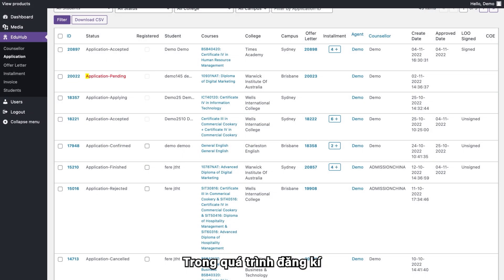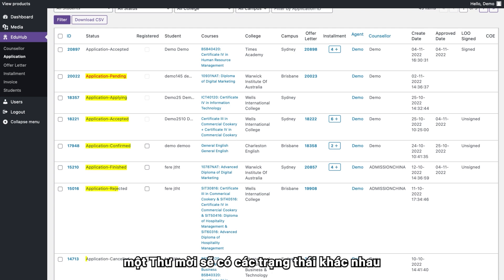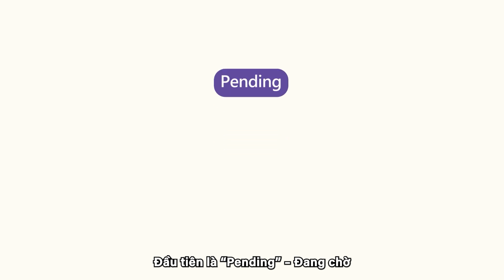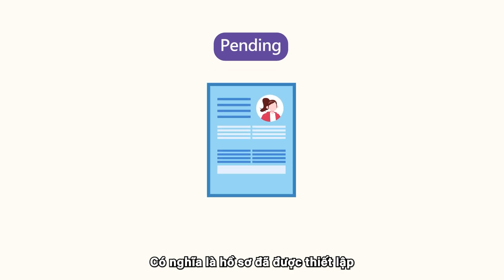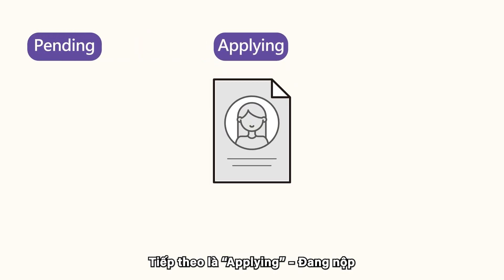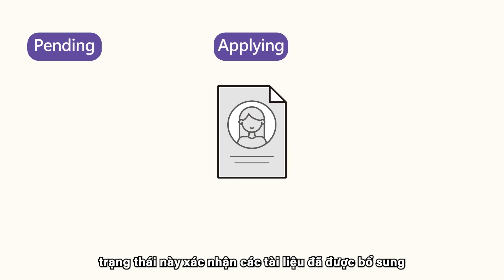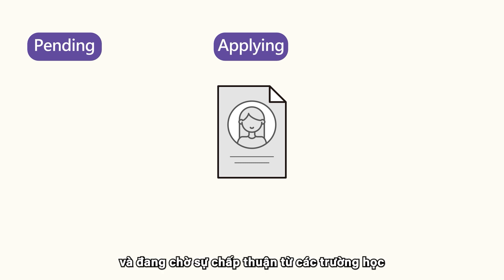During the application process, an offer letter can have one of seven different statuses. The first is Pending, meaning that the application has been lodged but documents still need to be uploaded. Next is Applying, indicating that documents have been uploaded and we are waiting for the College's approval.